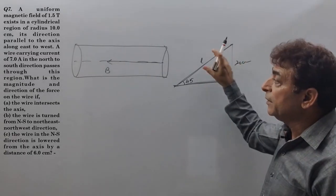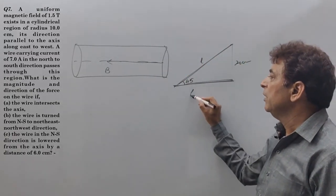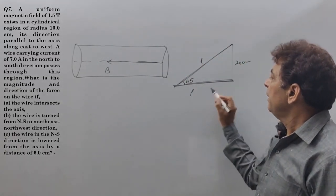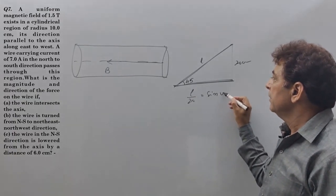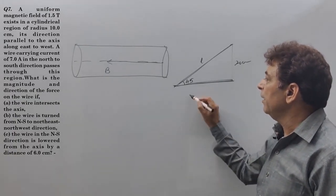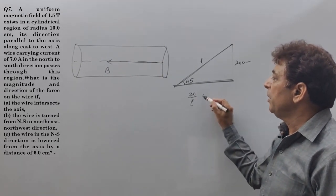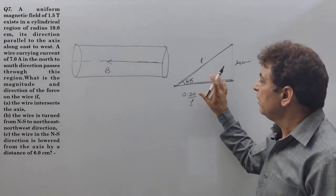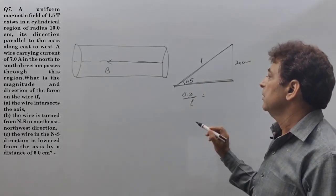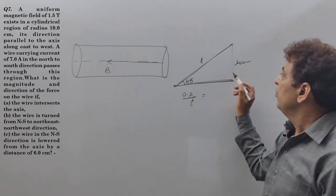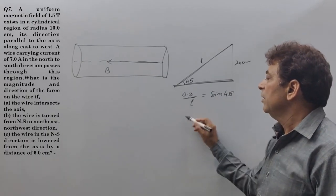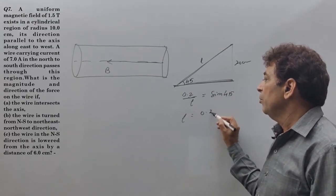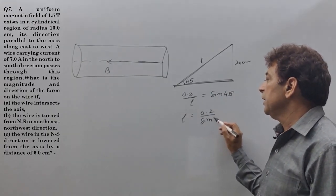Now the length of the wire in the magnetic field. 0.2 by L will be equal to sin 45. L will be equal to 0.2 by sin 45.